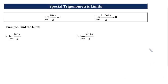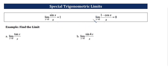Moving on to our final topic: special trigonometric limits. These are defined for you to use in finding other limits. The limit of sin x / x as x approaches 0 equals 1. We also have the limit of (1 − cos x) / x as x approaches 0 equals 0.